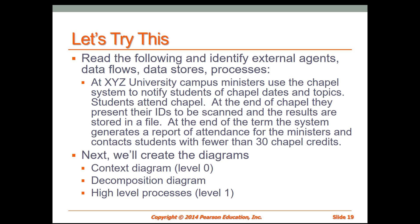Here we are with our scenario again. In the decomposition diagram, what we're trying to do is decide what processes fall underneath our overall system — we're going to decompose the system into its subordinate processes. We'll read through our scenario looking for what the processes are. At XYZ University, Campus Ministers use the chapel system to notify students of chapel dates and topics, so right there we have one of our processes.